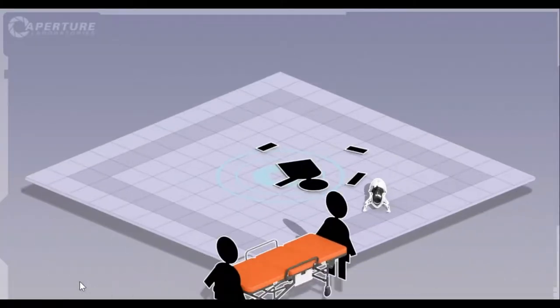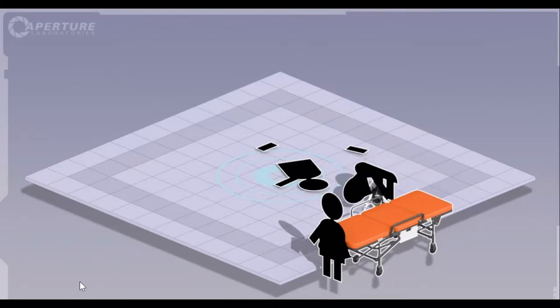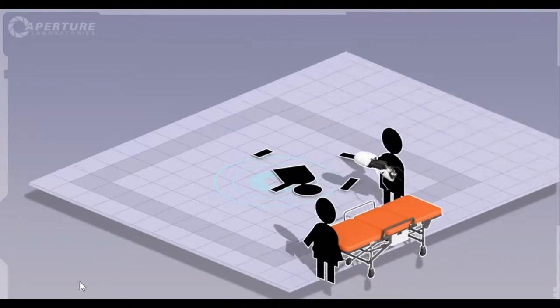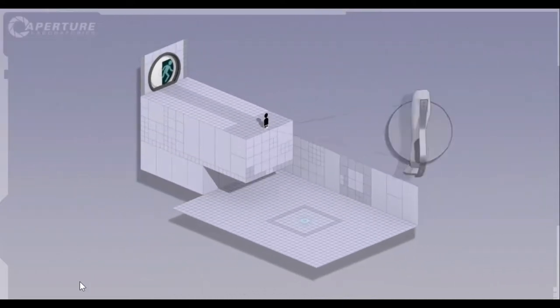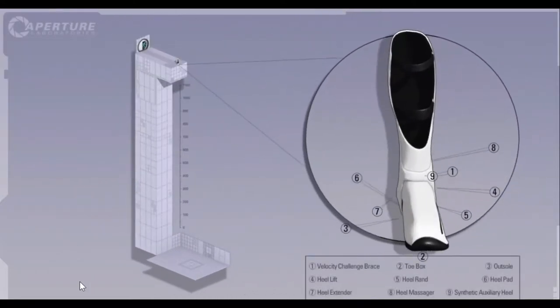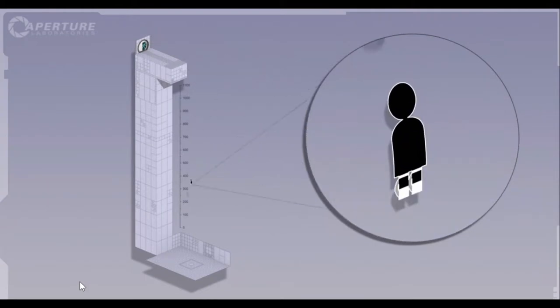Now, we have run into a reproducible human error problem. A lot of expensive equipment getting broken. But don't worry, Cave took care of it. Gentlemen, I give you the long fall boot. Think of it as a foot-based suit of armor for the portal device.